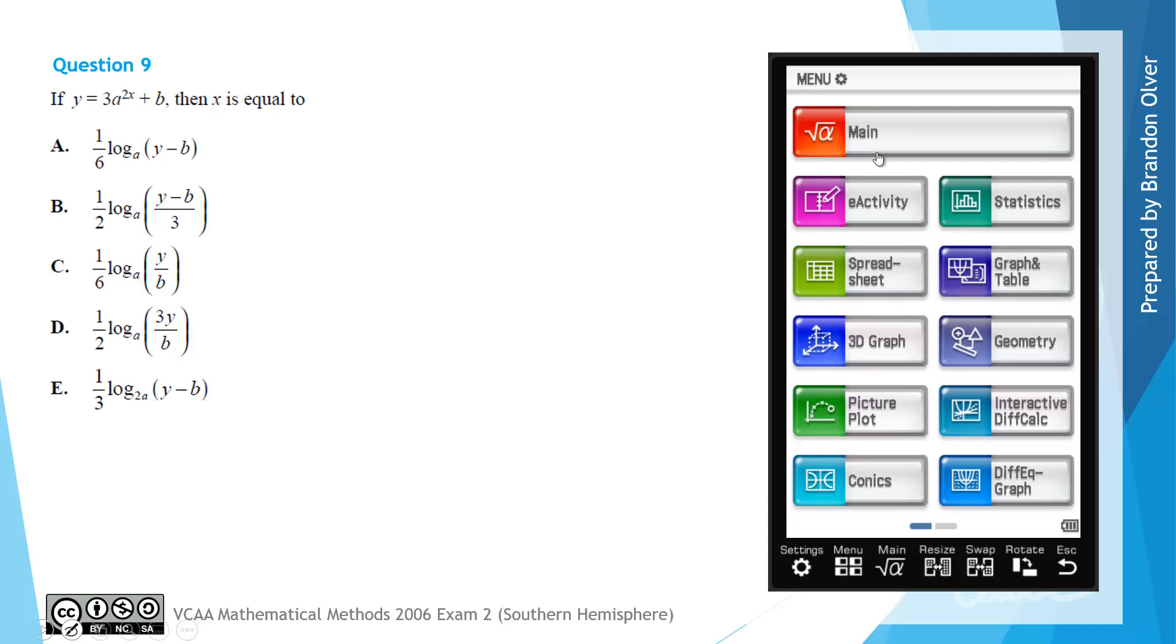So the first thing I'm going to start by doing is just subtracting b from both sides. So that would give y subtract b is equal to 3a to the power of 2x. Next we can divide by that 3. So this would give us y subtract b all divided by 3 is equal to a to the power of 2x.